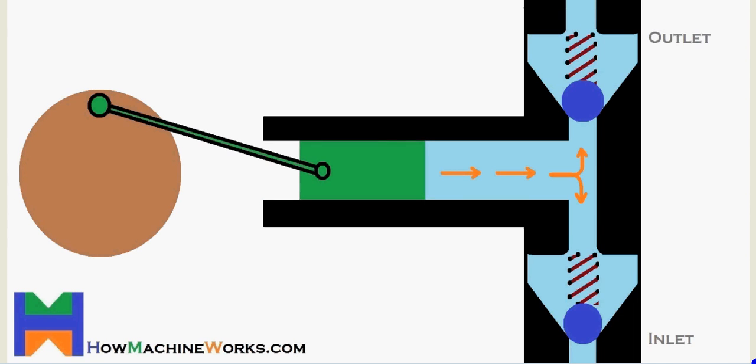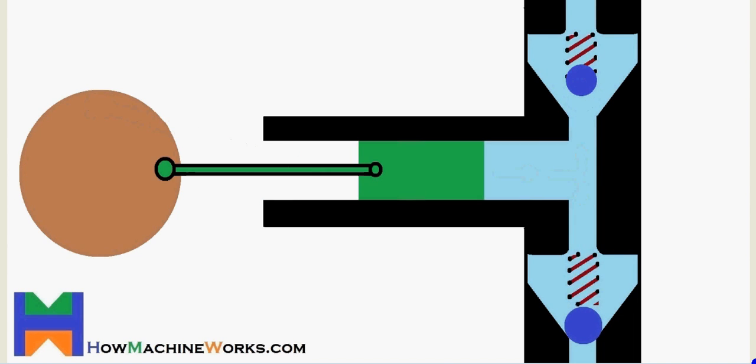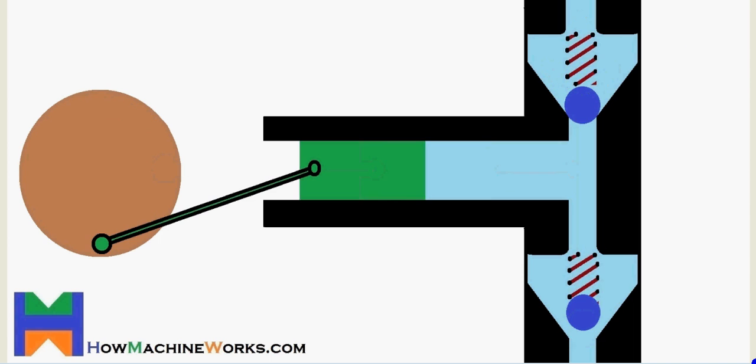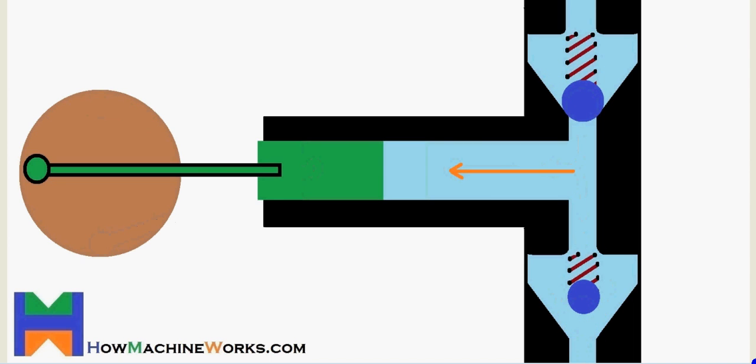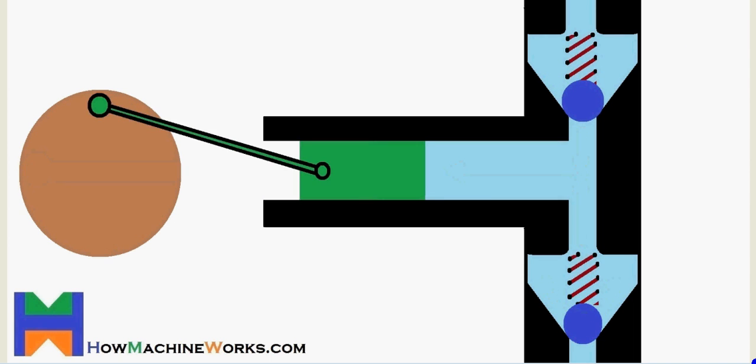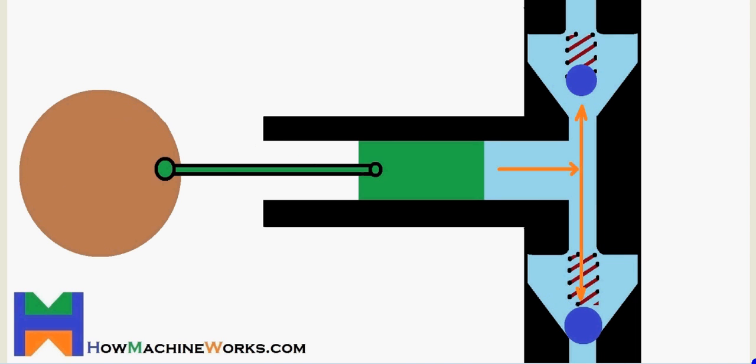Hi guys, welcome to HowMachineWorks.com. Today with the help of animation, let's learn how a plunger pump exactly works. It's a reciprocating type pump and also a positive displacement pump. First we'll identify all the components, then we'll go into the animation and learn its working.